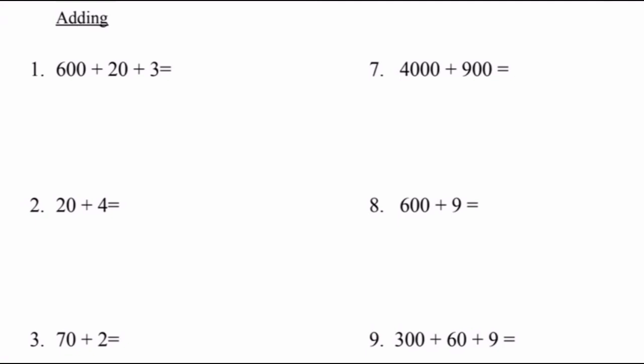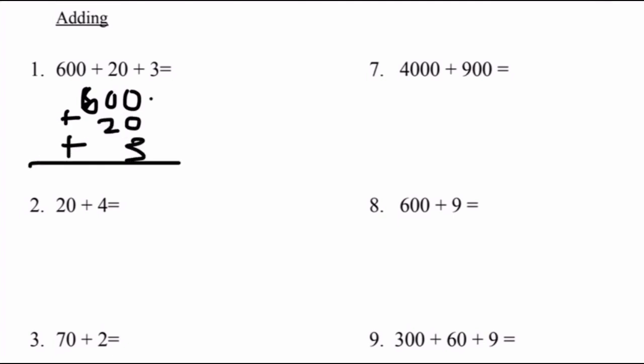Number one: 600 plus 20 plus 3. First, let's align the numbers vertically so it's easy for us to solve. 600 plus 20 plus 3. 3 plus 0 plus 0 equals 3. 2 plus 0 equals 2. Bring down to 6. 600 plus 20 plus 3 equals 623.